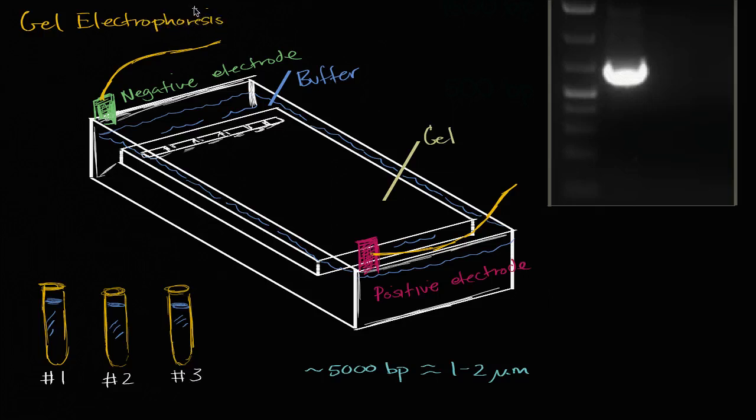It's called gel electrophoresis because it involves a gel, it involves electric charge, and phoresis is referring to the fact that we are going to cause the DNA fragments to migrate through a gel because of the charge. So phoresis is referring to the migration or the movement of the actual DNA. So how do we do this?